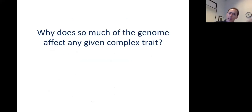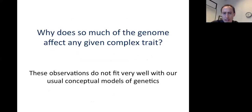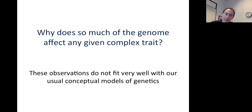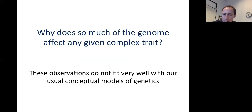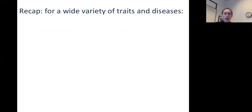Those are the three main observations, and they raise a core question: why does so much of the genome contribute to any given complex trait? These observations don't fit very well with our usual way of thinking about genetics, in which a graduate student goes into the lab with a gene that has an important association to a phenotype, and five years later comes out with a clear model for the mechanism. The fact that most of the genome is implicated suggests that most of it can't be acting through direct and easily understandable mechanistic links.